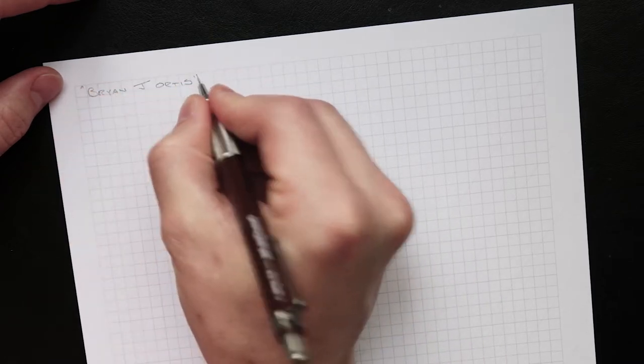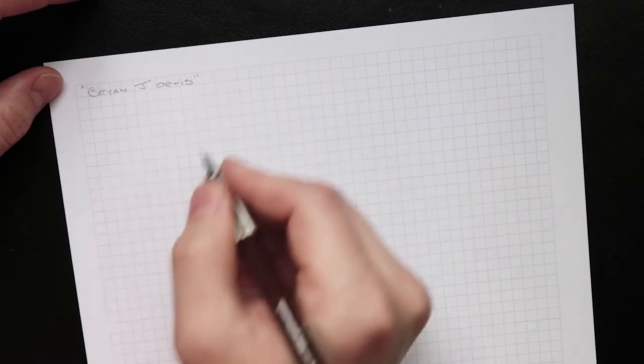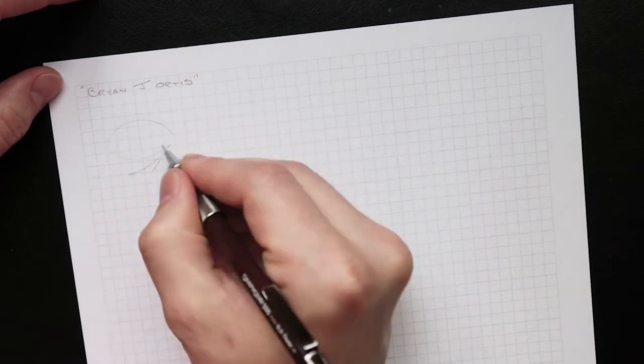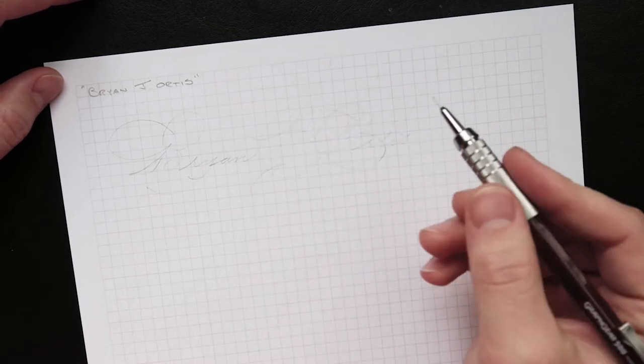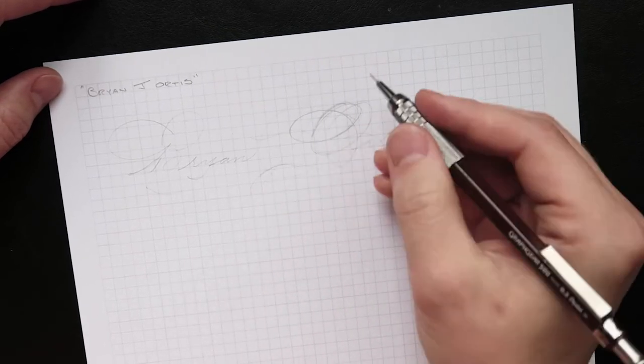We're just going to lay out all the Spenserian capitals and lowercase letters without any flourishes or connections, and we can start connecting things.